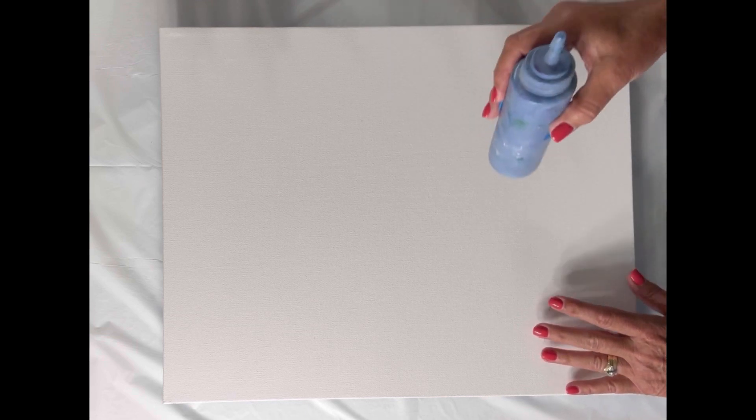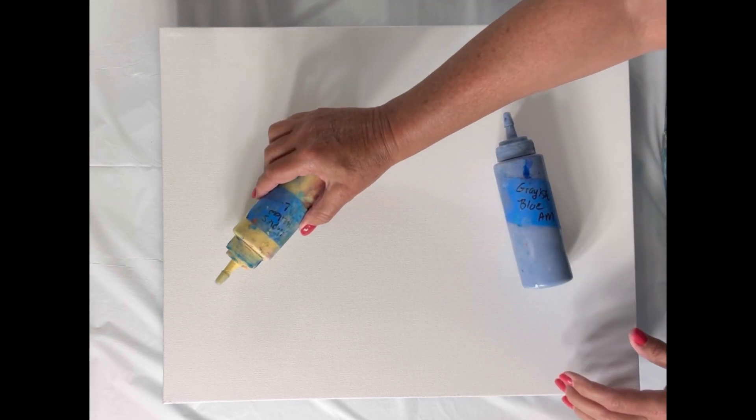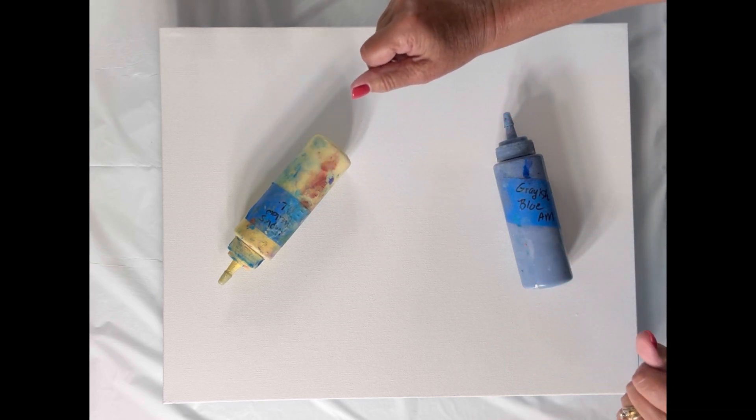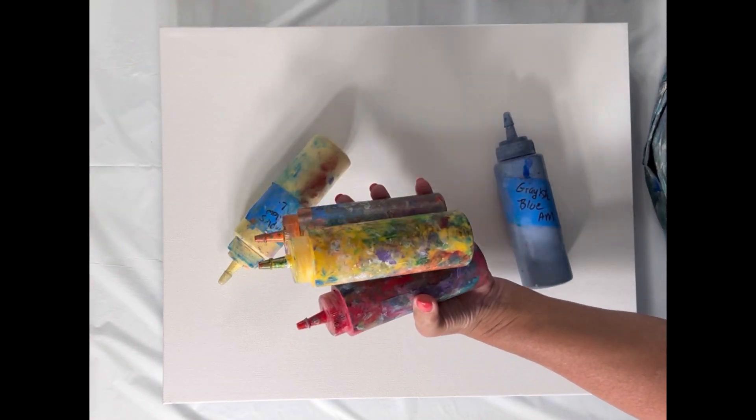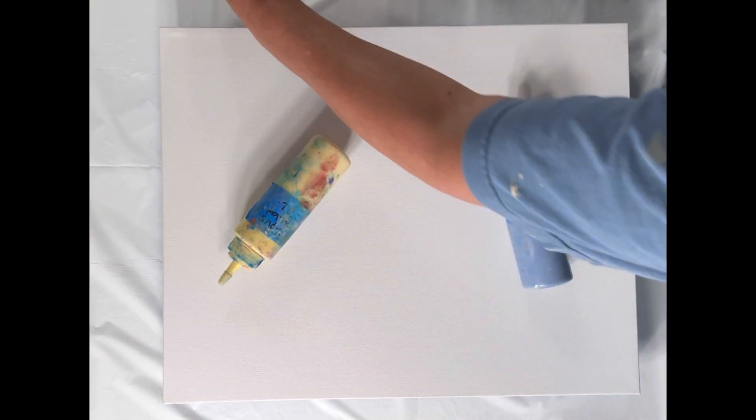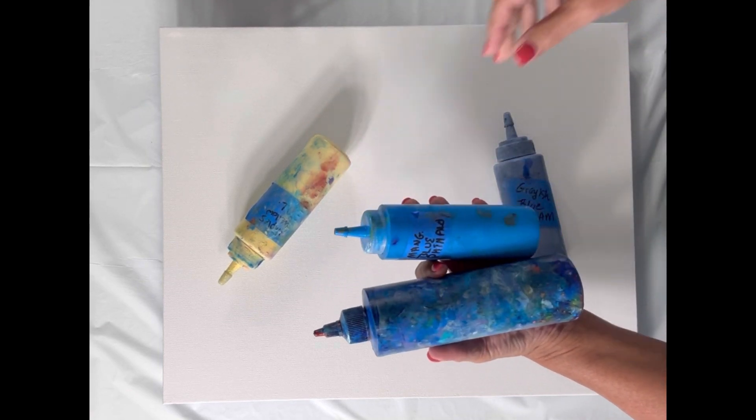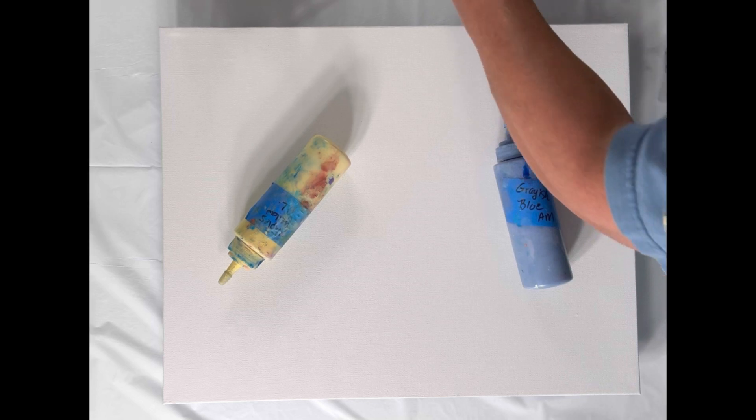So I'm going to do a base of grayish blue on the bottom and Naples yellow on the top, very pale versions. And then the top is going to be red, orange, and yellow with some gold. And then the bottom is going to be phthalo blue, manganese blue phthalo, and sky blue light with some silver.